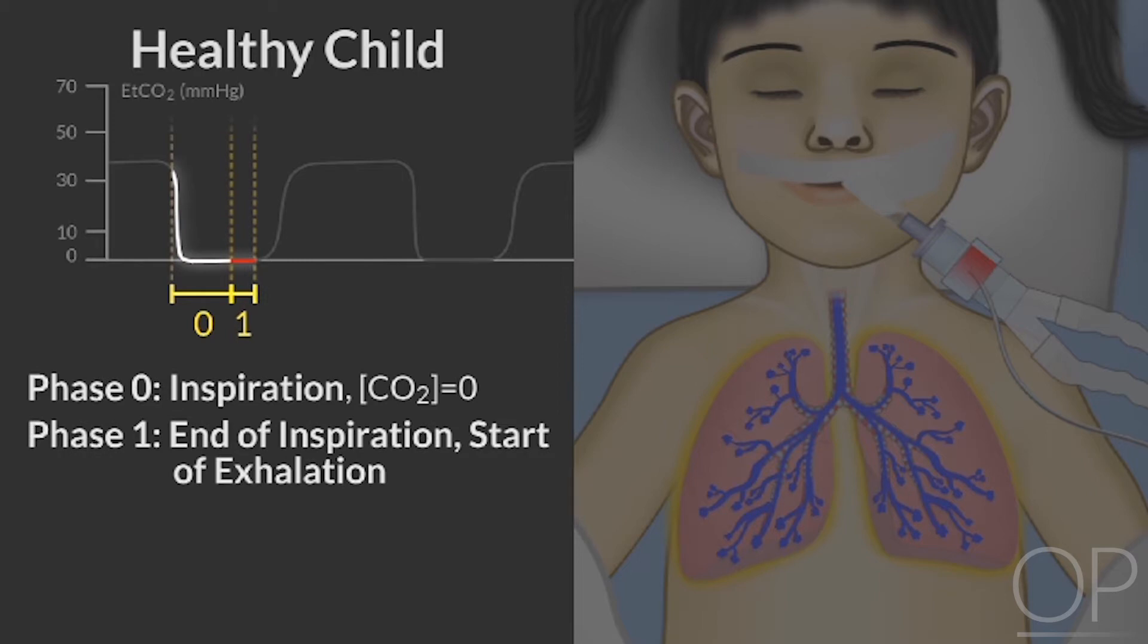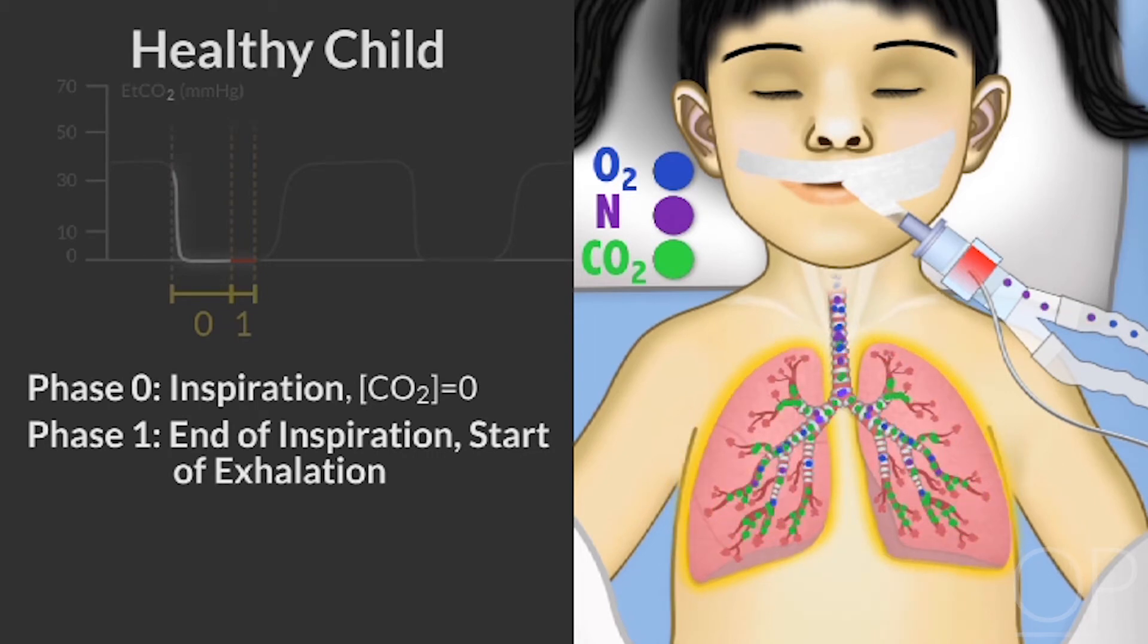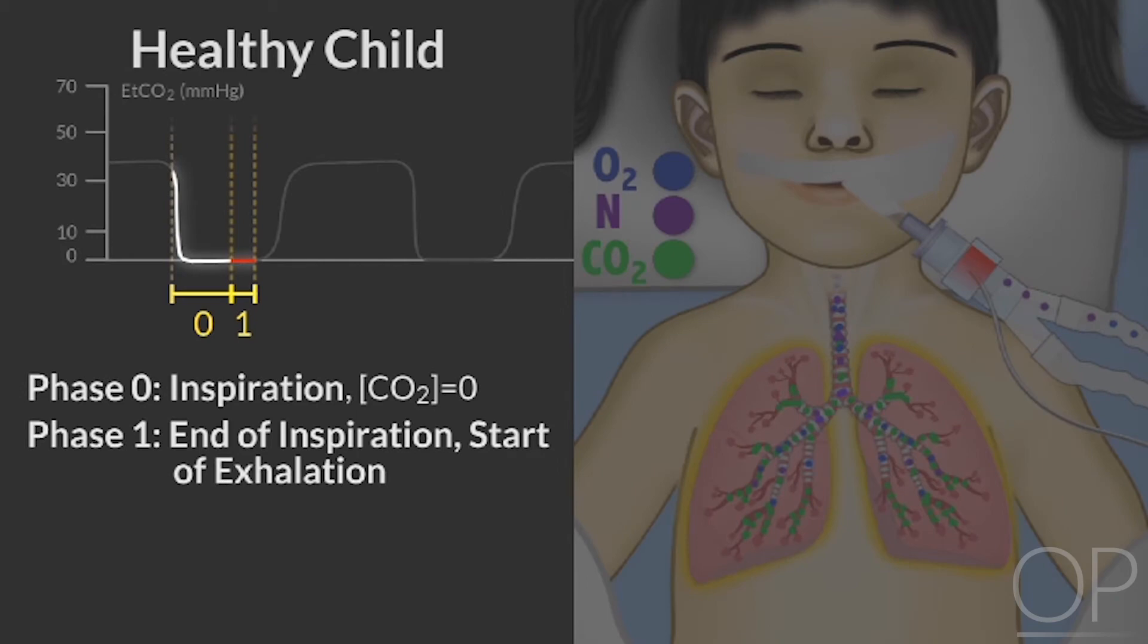Phase 1 begins as inspiration ends and exhalation begins. The volume contained in this phase is a mechanical dead space mixed with some anatomic dead space of the conducting airways. The partial pressure of CO2 during phase 1 will be 0 or very close to 0.